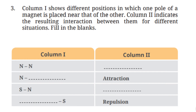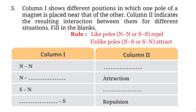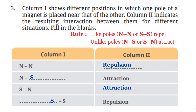Question 3: Column one shows different positions in which one pole of a magnet is placed near that of the other, and column two indicates the resulting interaction. Using the rule that like poles repel and unlike poles attract: north pole near north pole causes repulsion; north pole near south pole causes attraction; south pole near north pole causes attraction; and south pole near south pole causes repulsion.